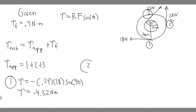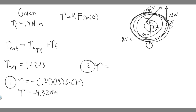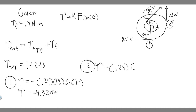For force 2: it pushes upward, causing counterclockwise rotation, so it's positive. The radius is 0.24 m, the force is 28 N, and the angle is again 90°. So torque 2 = 0.24 × 28 × 1 = 6.72 Nm.